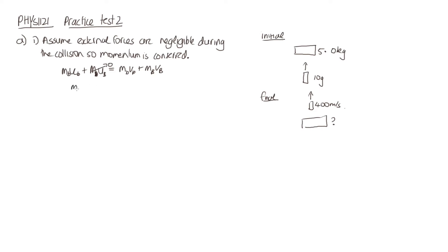We can write: the mass of the block times the final speed of the block is equal to the mass of the bullet — moving this term over — and the mass of the bullet is a common factor, so I'll put UB minus VB. So the final speed of the block is equal to MB(UB minus VB) over the mass of the block. Now we can substitute in the numbers.